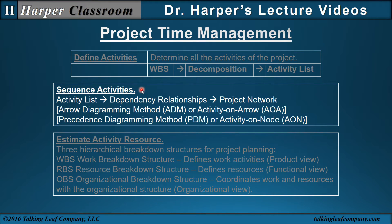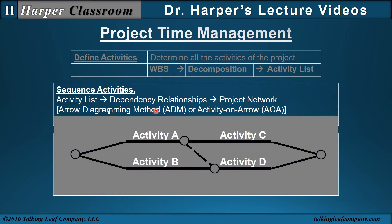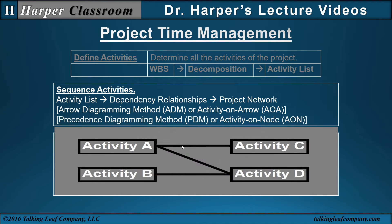Next is sequence the activities. Often the activities in the activity list have relationships — some activities have to be done before others or after others. Once that's determined you have a project network. Two primary forms of a project network are: the arrow diagramming method, or activity on arrow, where activities are on the arrows and nodes indicate predecessor relationships; and the precedence diagramming method, or activity on node, where the nodes are the activities and the arrows indicate the precedent relationships.